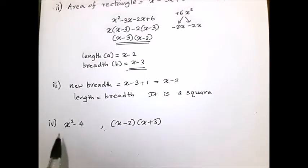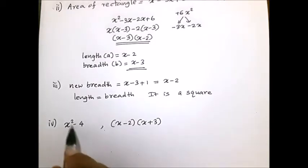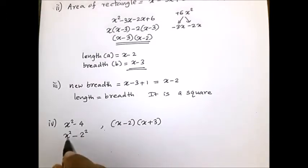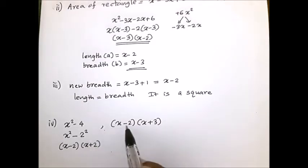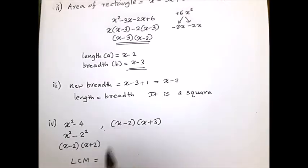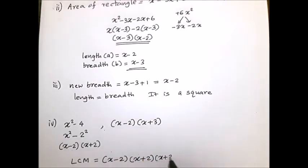Fourth part: find the LCM of two expressions. First factorize x² − 4. Write 4 as 2², giving the difference of two squares: factors are (x − 2)(x + 2). Then take each different algebraic expression: x − 2, x + 2, and x + 3. LCM equals (x − 2)(x + 2)(x + 3). This is the answer for the fourth part.